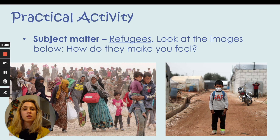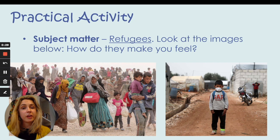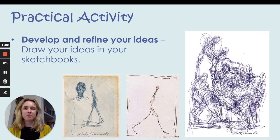We are now going to start thinking about our practical activity. Thinking back to developing an art project, we firstly need our subject matter. The subject matter for your art project today is going to be based on refugees. I'd like you to take a moment to look at these photographs and really think about how they make you feel, and then think about how the people in the photographs are feeling — the emotions and perhaps what they're going through. Now that we have a subject matter, we are going to develop and refine some of our ideas in drawing.